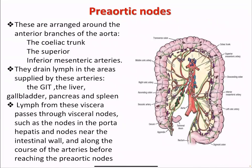Pre-aortic lymph nodes are arranged around the anterior branches of the aorta — the celiac trunk, superior mesenteric artery, and inferior mesenteric artery. They drain the areas supplied by these vessels, which are the GIT, liver, gallbladder, pancreas, and spleen. Lymph from these viscera passes through visceral nodes, such as nodes in the porta hepatis and nodes near the intestinal wall and along the course of the arteries, before reaching the pre-aortic lymph nodes.